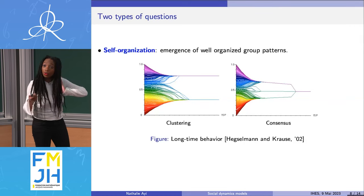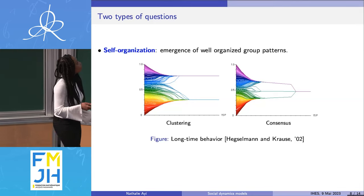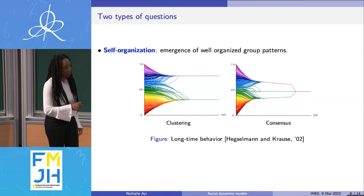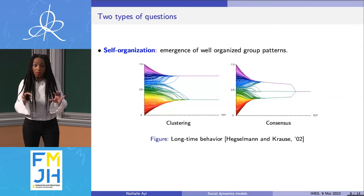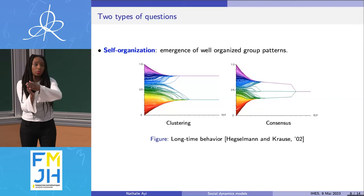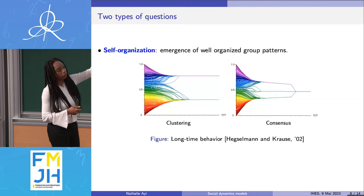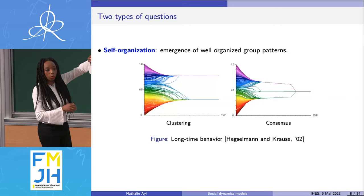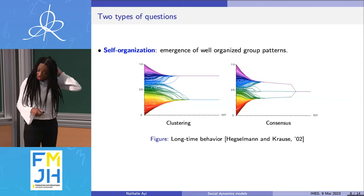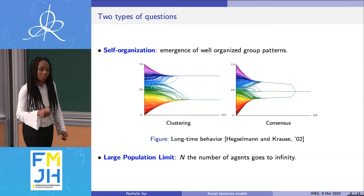There are two types of questions I'm interested in. The first is self-organization: what happens in long-time behavior? In the Hegselmann-Krause dynamics, it has been studied and we know that naturally what we obtain is consensus — the agents naturally try to reach the same opinion. Another case that appears is what we call clusters: the population divides into different groups, each reaching a common opinion, but with a finite number of distinct opinions in the end. This applies to the case where everyone interacts with everyone.